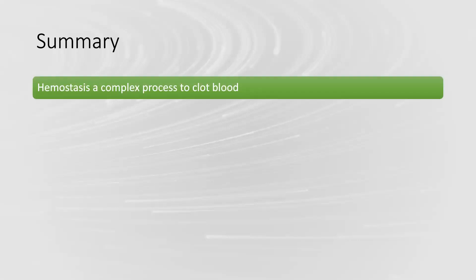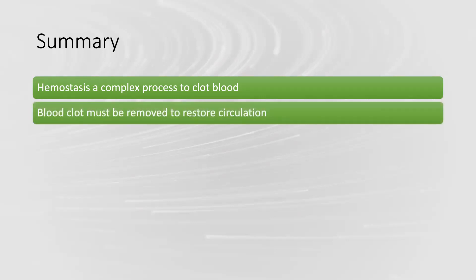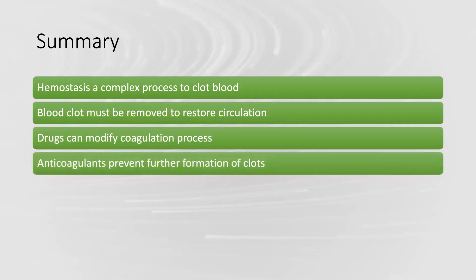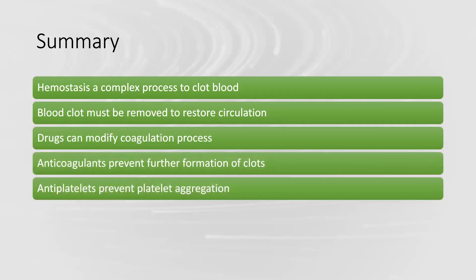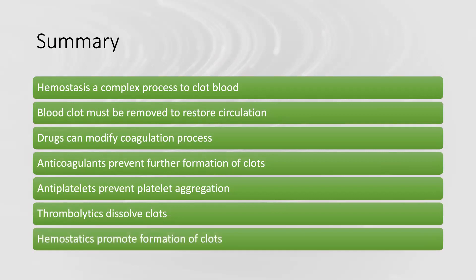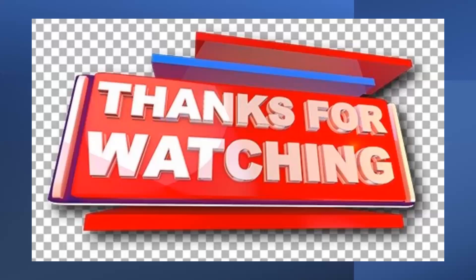In summary: hemostasis is a complex process to clot the blood, and blood clots must be removed to restore circulation. Drugs can modify the coagulation process — anticoagulants prevent further clot formation, antiplatelets prevent platelet aggregation, thrombolytics dissolve clots, and hemostatics promote clot formation.